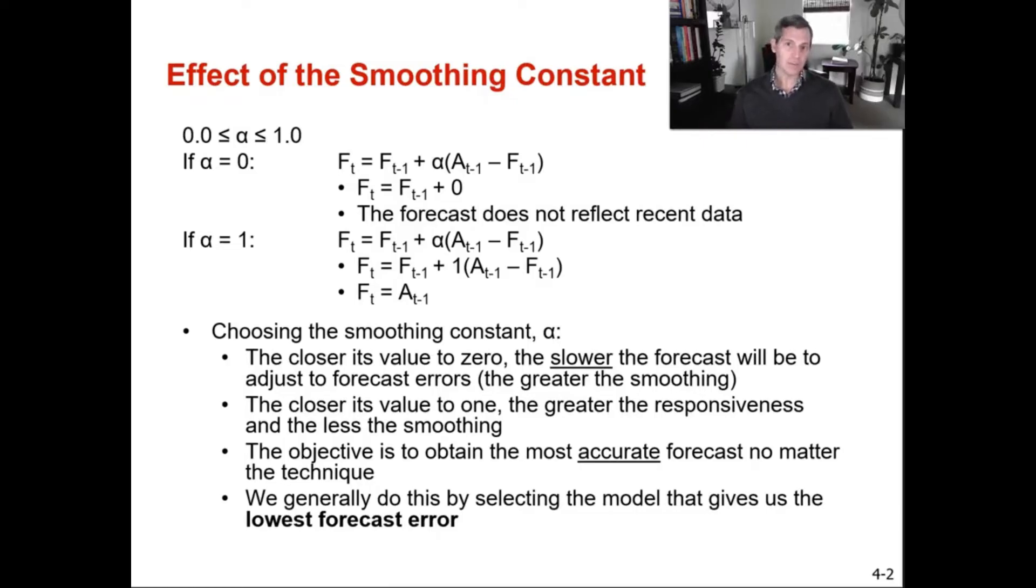The objective, just like I was talking about in our last video with moving averages, is you want to get the most accurate forecast no matter the technique. So in the example I'm going to show you in two slides from now, maybe they feel like the alpha that they've picked works for them, but we don't know because we don't have historical data. So it doesn't seem like they're going to get very close, but maybe they're okay with that because historically we don't know if they just had a really good month.